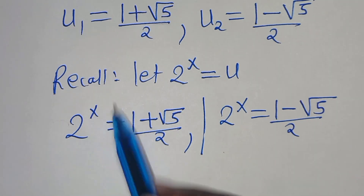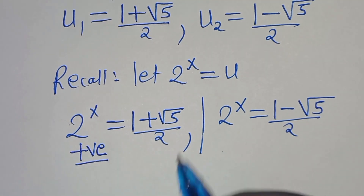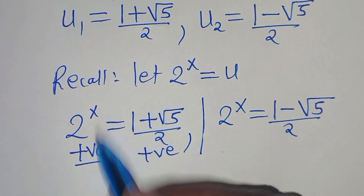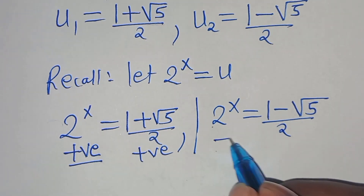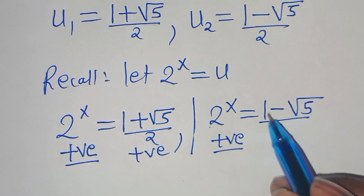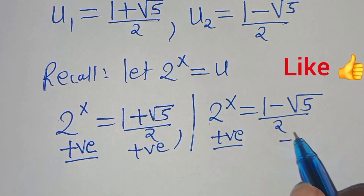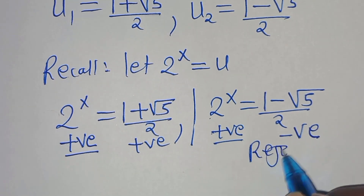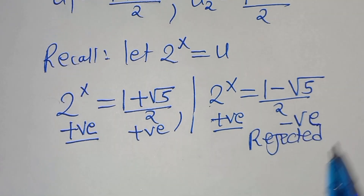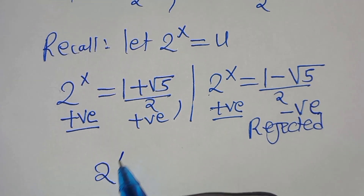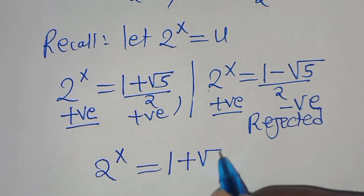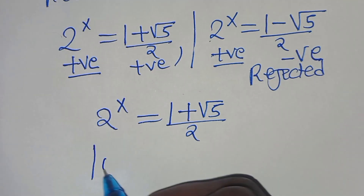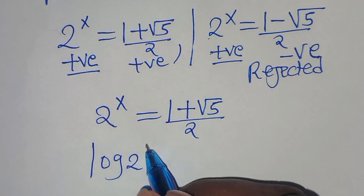We find that 2 to the power of x always gives a positive number. On the right-hand side, (1 + √5)/2 is a positive number so we can proceed. However, (1 - √5)/2 is a negative number, so we cannot solve for x from that part — it is rejected. Let's proceed with 2^x = (1 + √5)/2.